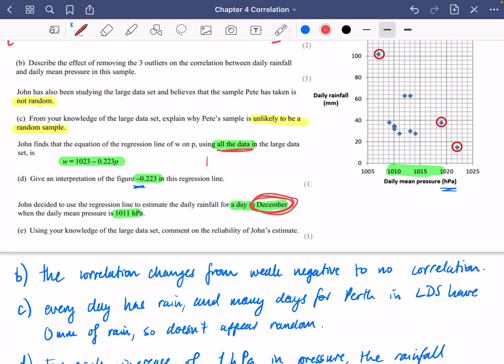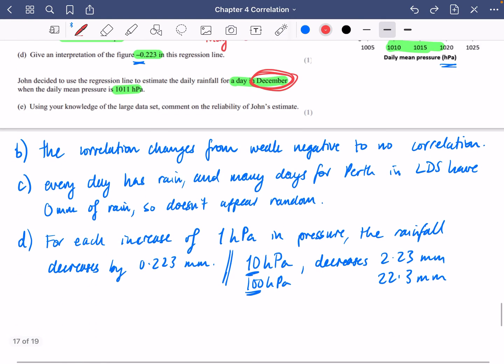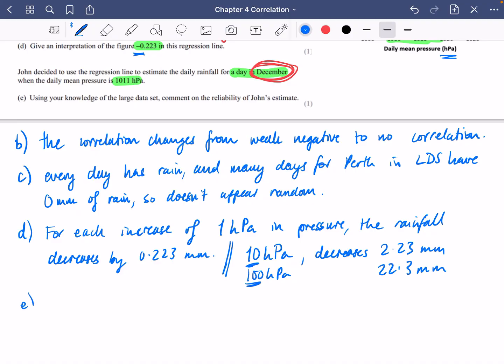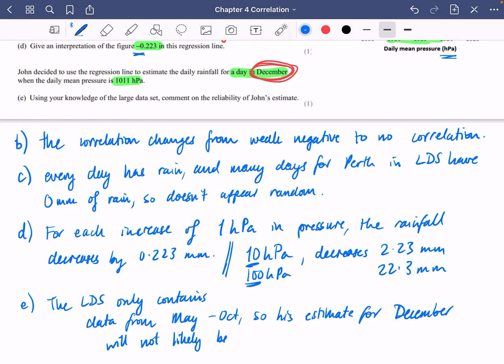It's being done in December. He's using all of the data in the large data set but the large data set goes from May to October 2015 so it's not going to be valid for December. So we just need to write that down. The large data set only contains data from May to October so his estimate for December will not be reliable.